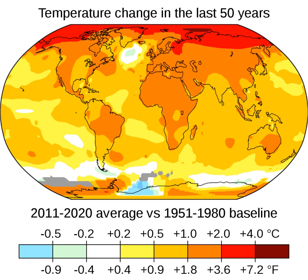In 2019, the concentrations of CO2 and methane had increased by about 48% and 160%, respectively, since 1750. These CO2 levels are higher than they have been at any time during the last 2 million years. Concentrations of methane are far higher than they were over the last 800,000 years. Global anthropogenic greenhouse gas emissions in 2018, excluding those from land use change, were equivalent to 52 billion tonnes of CO2. Of these emissions, 72% was CO2, 19% was methane, 6% was nitrous oxide, and 3% was fluorinated gases.